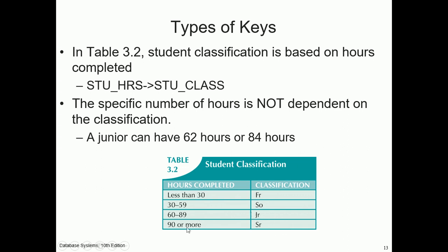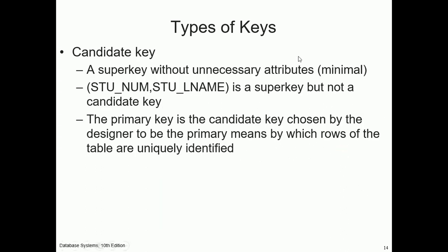A candidate key is a super key without unnecessary attributes — it is minimal. For example, student number combined with student last name is a super key but not a candidate key. The candidate key is usually the primary key. The primary key is a candidate key chosen by the designer to be the primary means by which rows of the table are uniquely identified.